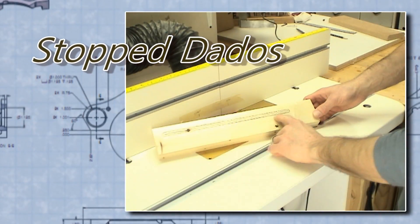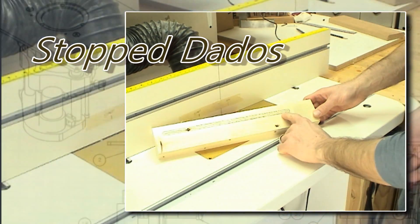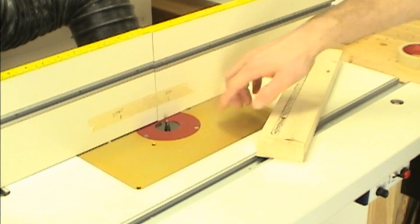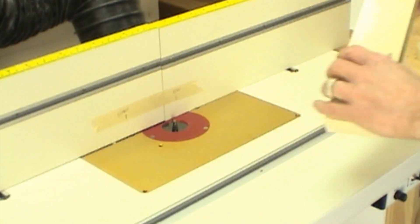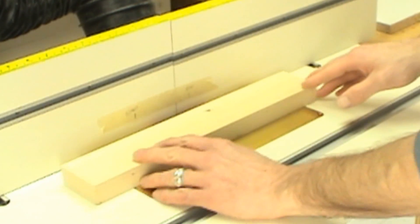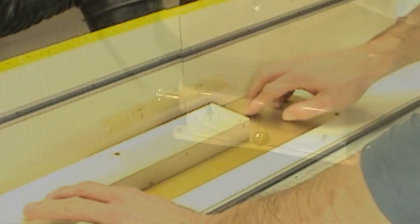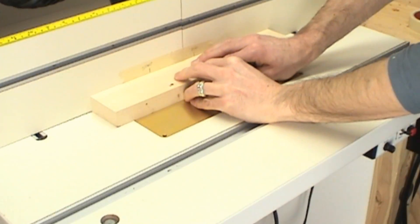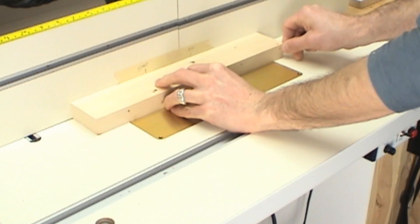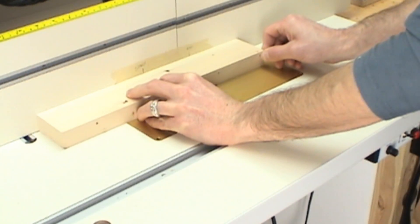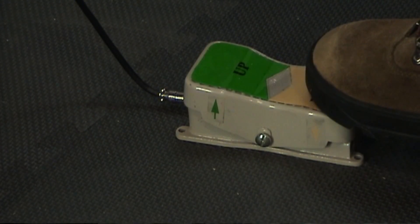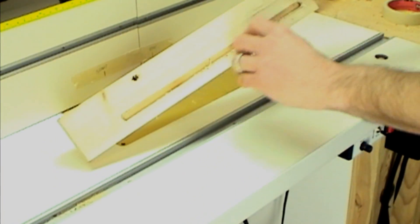Creating a stopped dado on a traditional router table involves putting the workpiece down onto the spinning bit. Well here, I'm just using two marks indicated on the fence, where to start the dado and where to end the dado. So I'll start the router, bring the router bit up into the work, advance the board, and stop when I get to my indicator line. You can cut a perfect stop dado using this method without the hazard of putting your workpiece down onto the spinning bit.